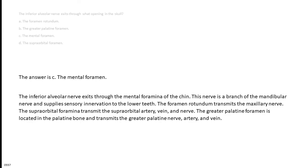The answer is C, the mental foramen. The inferior alveolar nerve exits through the mental foramen of the chin. This nerve is a branch of the mandibular nerve and supplies sensory innervation to the lower teeth. The foramen rotundum transmits the maxillary nerve. The supraorbital foramen transmits the supraorbital artery, vein, and nerve. The greater palatine foramen is located in the palatine bone and transmits the greater palatine nerve, artery, and vein.